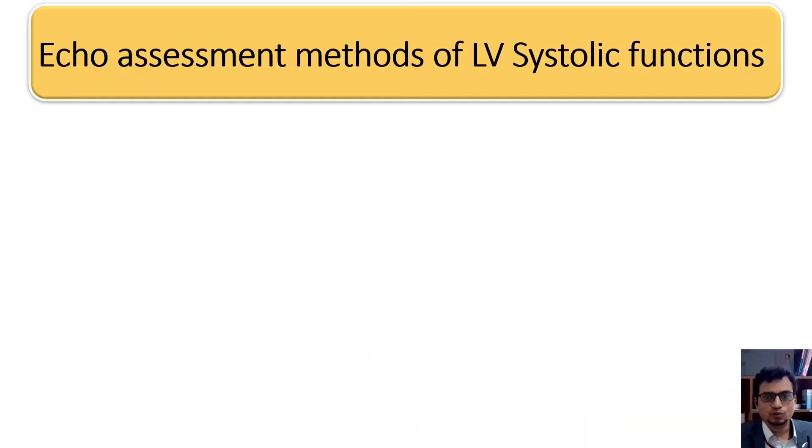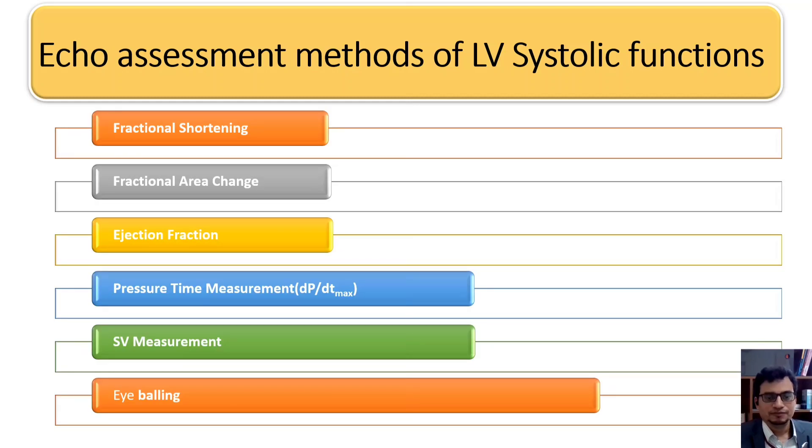Various parameters are available to assess the LV systolic functions such as fractional shortening, fractional area change, ejection fraction, DP over DT max, stroke volume and eyeballing. We are going to learn all these assessment methods one by one in this video.